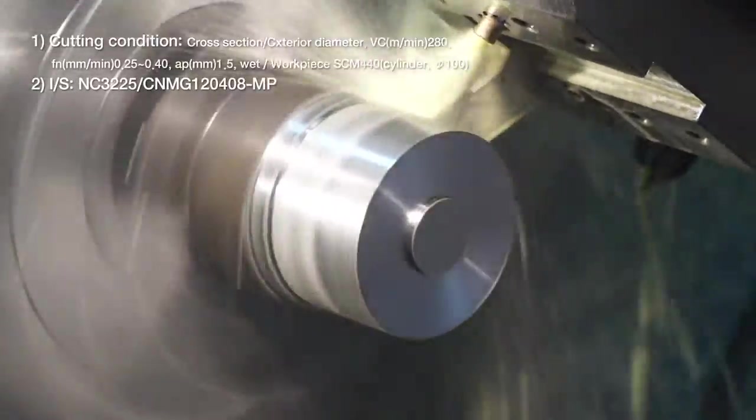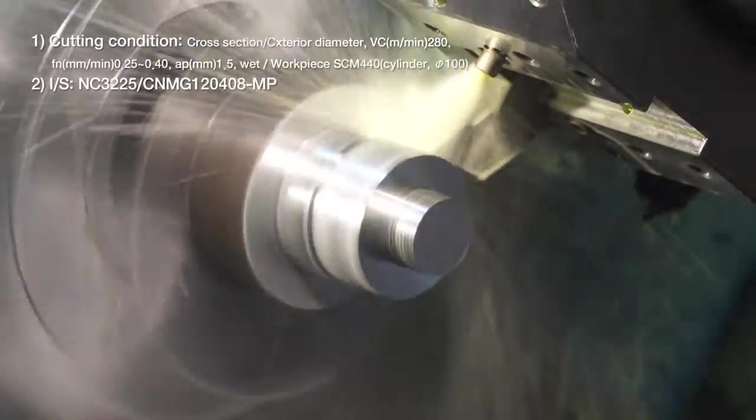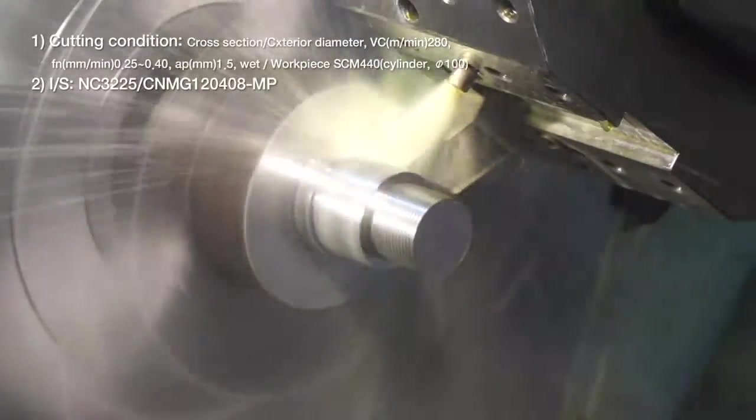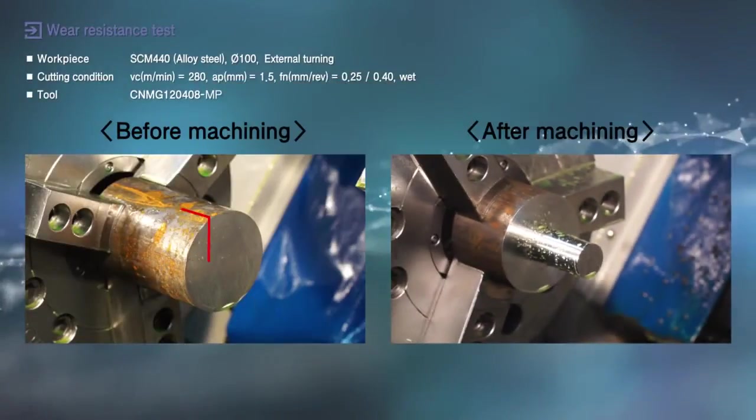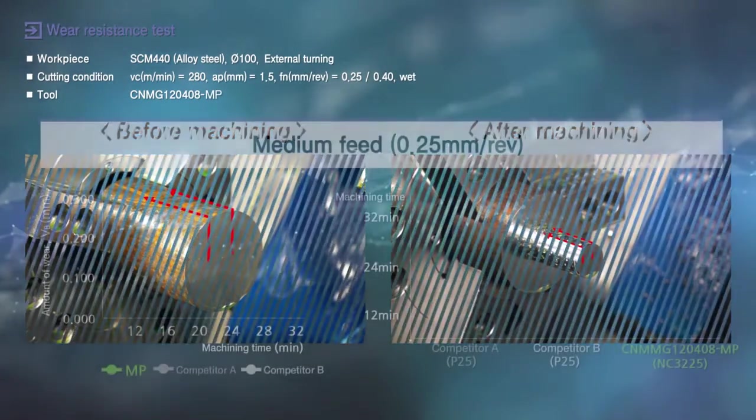From the wear resistance test of face and exterior diameter of alloy steel, the new medium cutting chip breaker for NC3225MP continually demonstrates superior wear resistance over all competitor products we face.